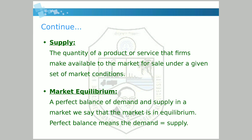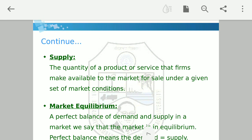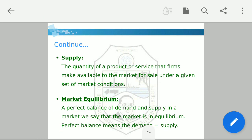Supply is the quantity of a product or service that a firm makes available to the market for sale under a given set of market conditions. Using the farmer example: if the farmer produces rice for his own consumption, that does not become supply. But whenever he produces it for selling, that becomes supply.